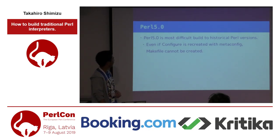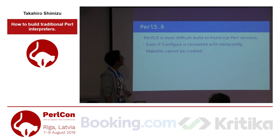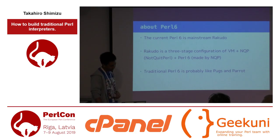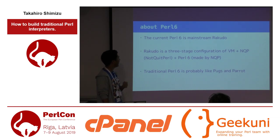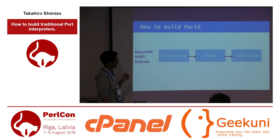Even if configure is recreated with MetaConfig, the makefile cannot be created. I guess I tried very hard. Finally, I'll introduce Perl 6. Perl 6 — the mainstream is Rakudo. Rakudo is a three-stage configure process of VM, NQP, and Perl 6. Traditional Perl 6 implementations include Pugs and Parrot. I can test for Perl 6 — that is Rakudo. Configure is different from the shell script approach.